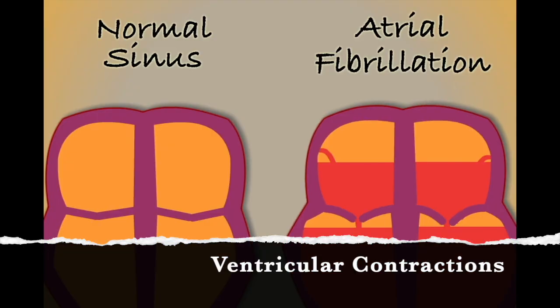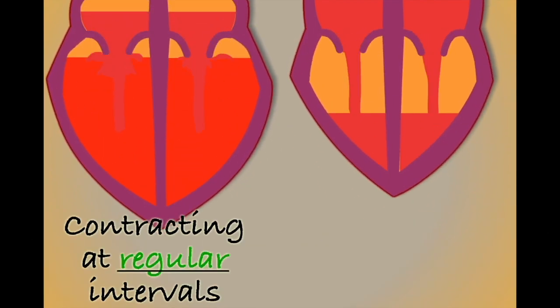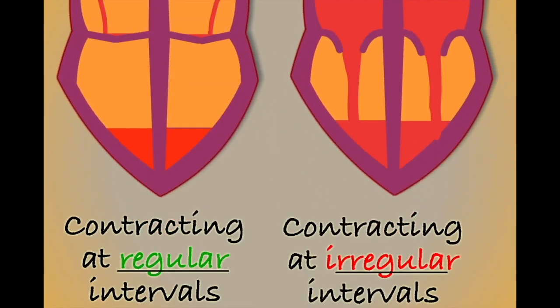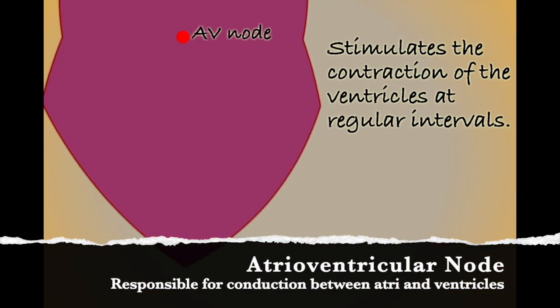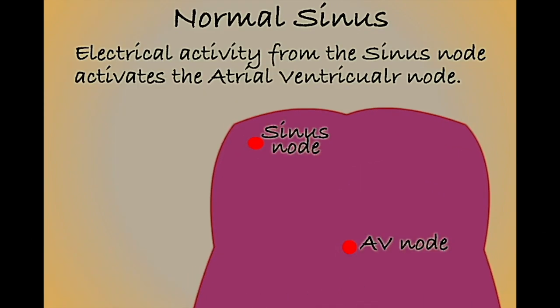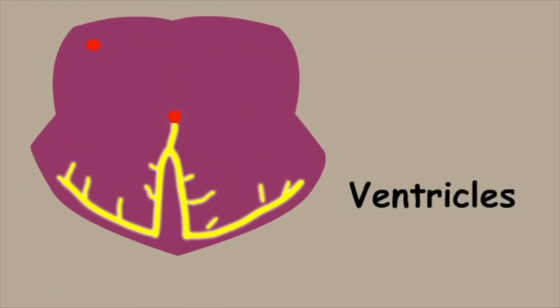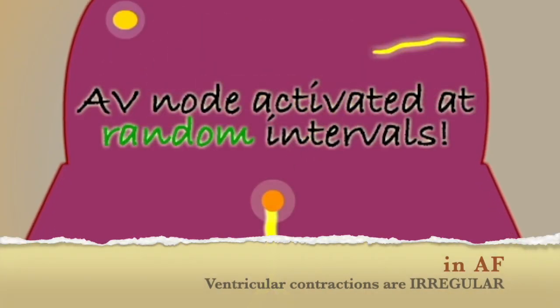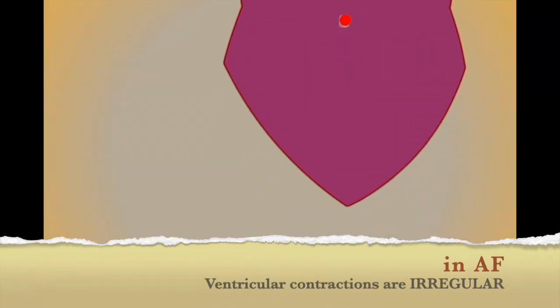Another diagnostic feature of AF is irregular contractions of the ventricles. The conduction of impulses from the atria to the ventricles occurs across a specialised cluster of cells known as the atrial ventricular, or AV node. During a sinus rhythm, electrical impulses are carried straight to the AV node by the normal conduction pathways, ensuring a beat of the ventricles follows each contraction of the atrium. In AF, the more irregular conduction of electrical impulses through the atria leads to the irregular stimulation of the AV node.